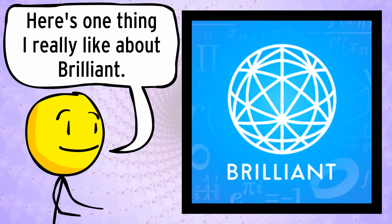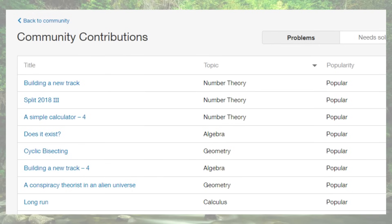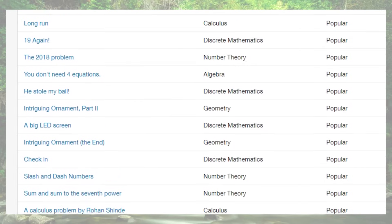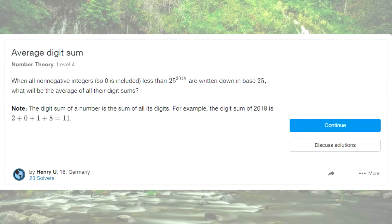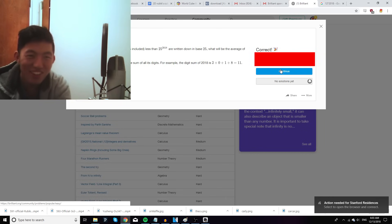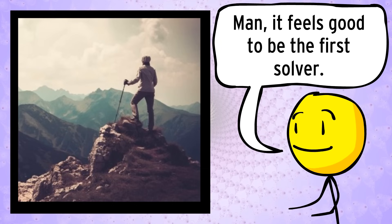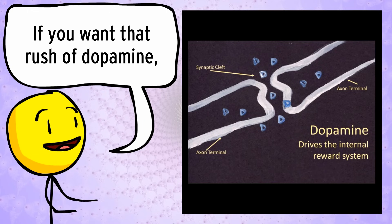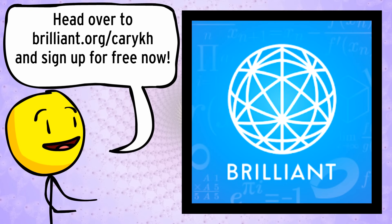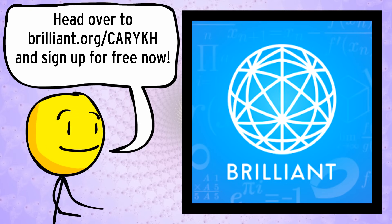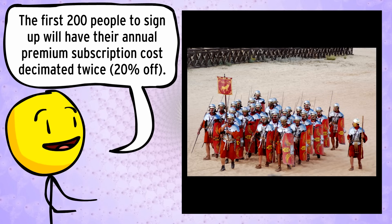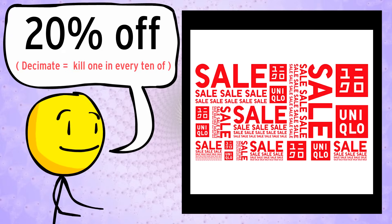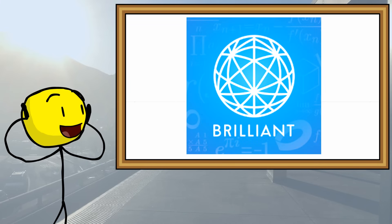One thing I really like about Brilliant is the community producing a constant stream of new problems and solutions — and if you're adventurous enough, you can dive in. Head over to Brilliant.org/CarrieKH and sign up for free. The first 200 people to sign up will have their annual premium subscription cost dropped by 20%. Thanks to Brilliant.org for sponsoring this video.